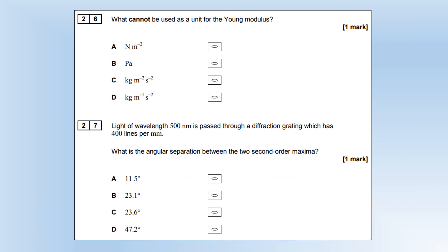Which cannot be used as the unit of Young modulus. Young modulus is the same unit as stress, which is the force divided by area. So A and B are clearly fine. And a Newton is a kilogram meters per second squared. So Young modulus is clearly kilogram per meter per second squared, which means C is wrong.